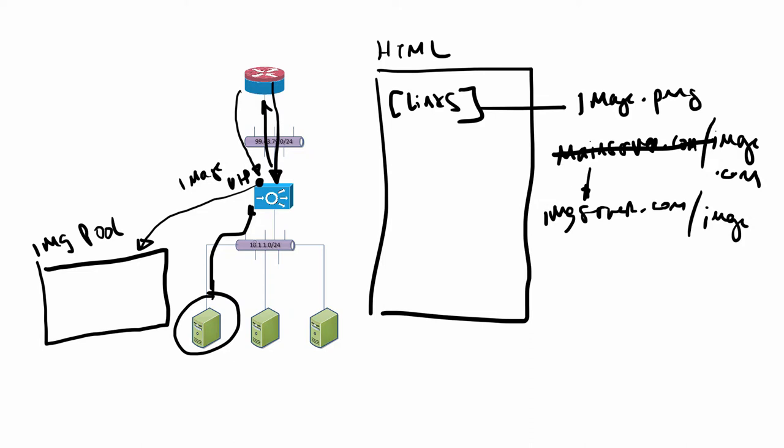You could easily write an iRule that says every time you see mainserver.com, change it to imageserver.com for certain types of links — like if it's a PNG or JPEG, change those links, but leave everything else the same. That would be a fairly straightforward rule.